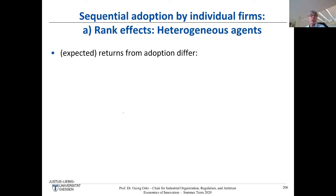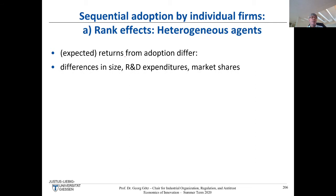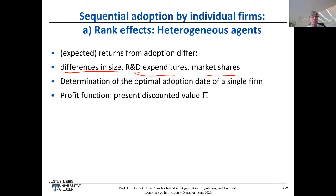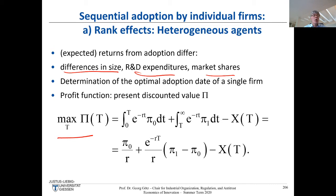We set up the present discounted value Π as a function of adoption date T, which we choose to maximize. The notation: π₀ is the profit stream without the new technology; π₁ is the profit stream once you've adopted. In the first phase you earn the old-technology profit; once you adopt the assembly line with robots or similar, π₁ is your new profit. In continuous time, we use exponential discounting with interest rate r.